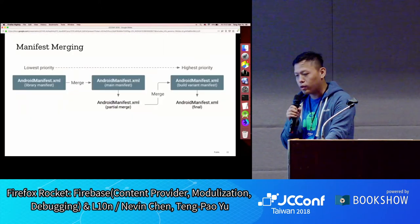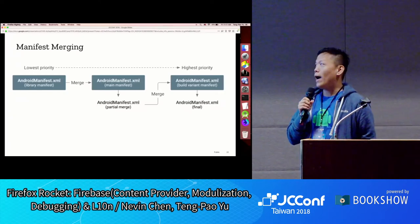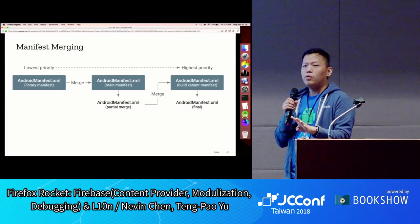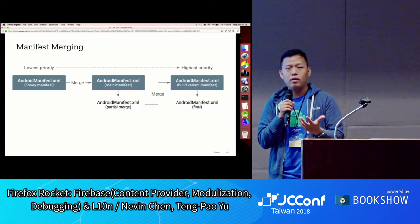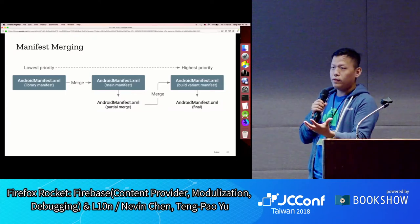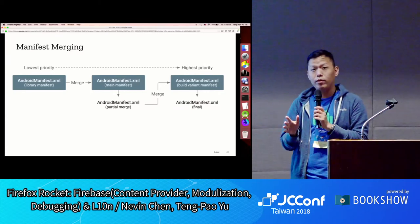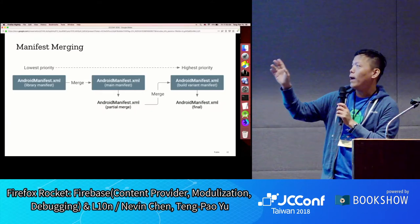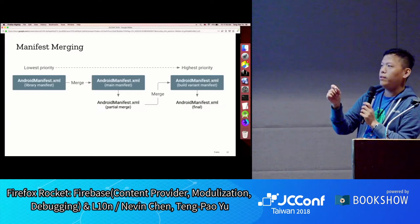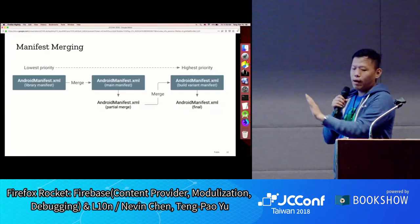This is manifest merging. In Android, the manifest reports to the Android system what components your app has. You have activities for UI, content providers for sharing information, broadcast receivers, and services to run without UI. When you add a library, it also has its own manifest that gets merged into your APK under the hood. If you decompress your APK and look at the manifest, you'll find a lot of things you didn't add yourself.